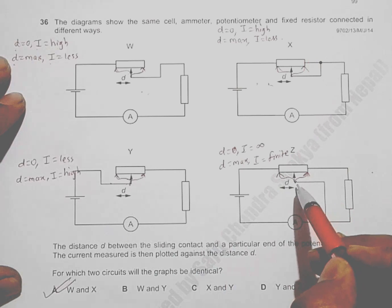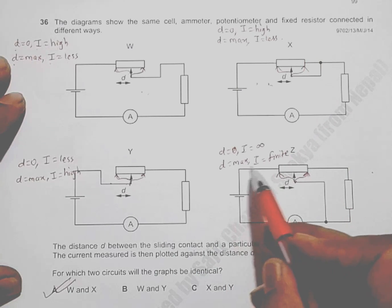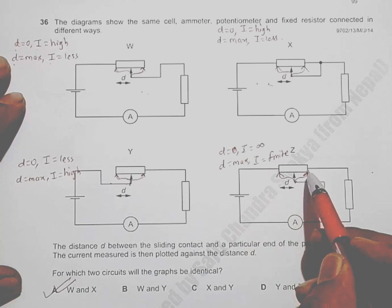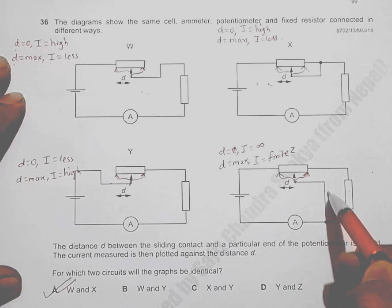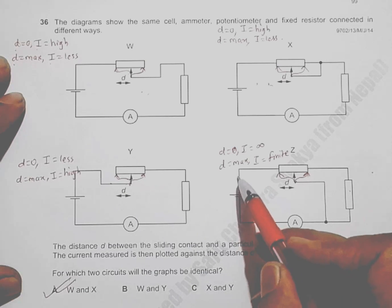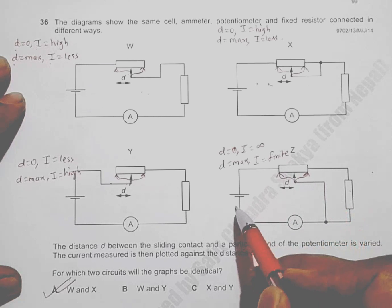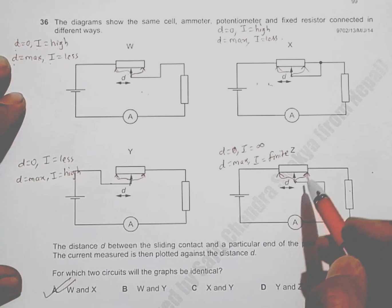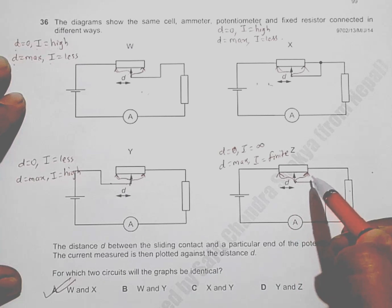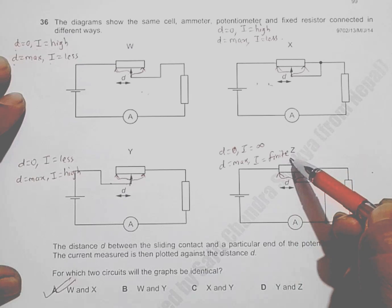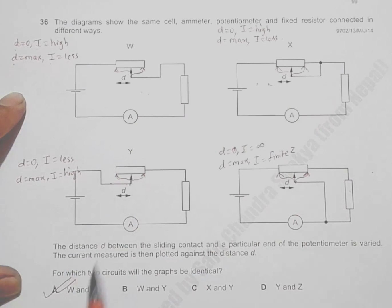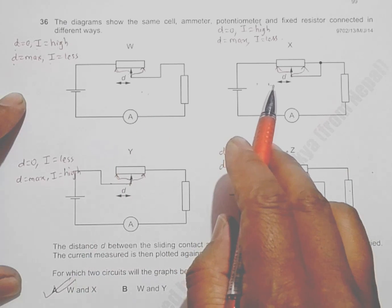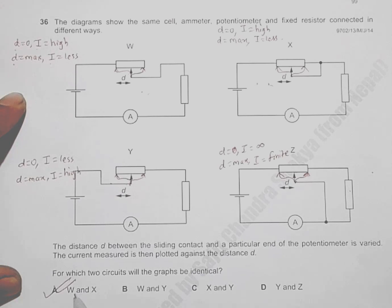When d equals maximum in diagram four, current flows along the path of no resistance through the potentiometer wire, giving a certain finite value. So it starts at infinity and drops to a finite value — a different shape altogether. Comparing all four graphs, diagrams one and two are similar to each other. Therefore the correct answer is graphs W and X, which corresponds to choice A.